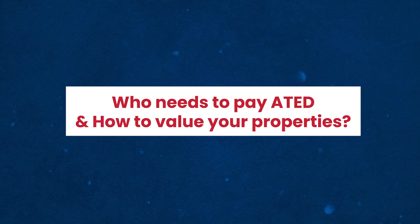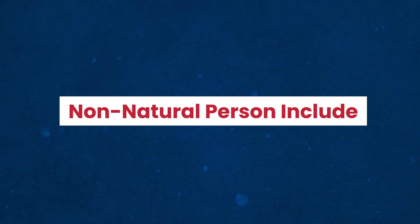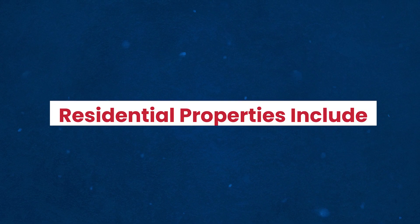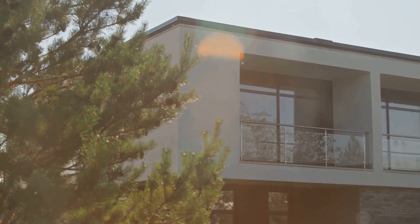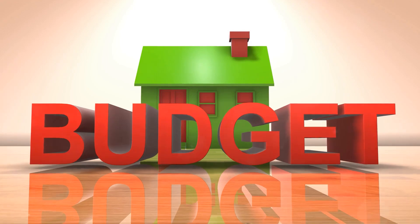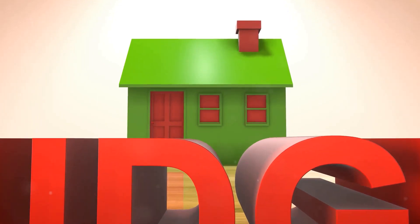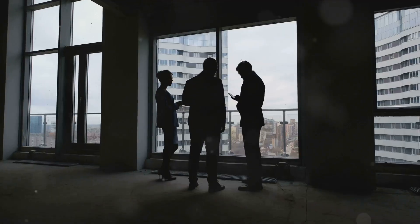Who needs to pay ATED and how to value your properties? ATED applies to non-natural persons who own UK residential properties valued above £500,000 on a specific date, which is usually the 1st of April of the previous year. Non-natural persons include companies, partnerships with corporate members, and collective investment schemes. Residential properties include houses, flats, apartments and bungalows, as well as any land or gardens that are part of the property. The value of your property for ATED is based on the open market value — the price the property would fetch if sold on the relevant date. You can use a professional valuer or online tools to determine the value, however you are required to revalue your property every five years for ATED purposes.